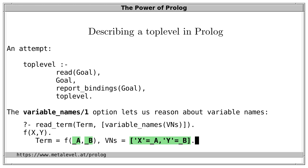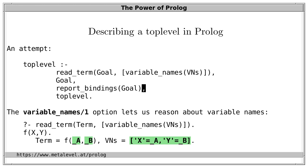So the first change we make is to use read_term with the variable_names option to read the query. This gives us VNs: a mapping of name-variable pairs. We use this mapping when reporting variable bindings in answers — we print the names of variables as they were used in the query, not just fresh variable names. In this way we have access to all variable names that appeared in the query, also to those of variables that have become instantiated during execution. There is a corresponding variable_names option for writing terms, so this is well within the scope of the Prolog standard.